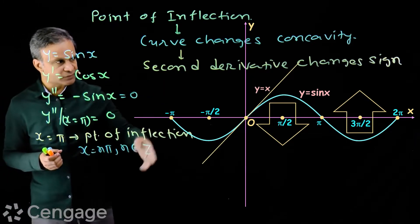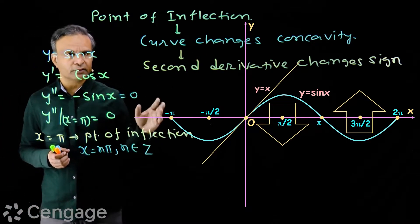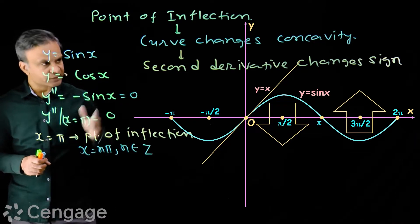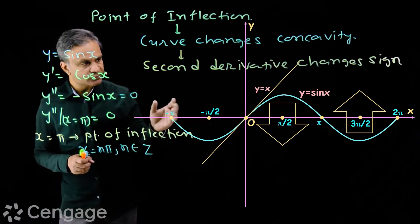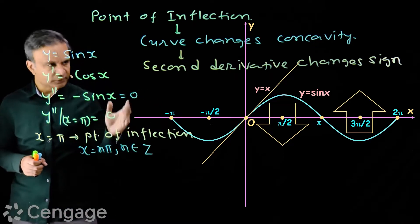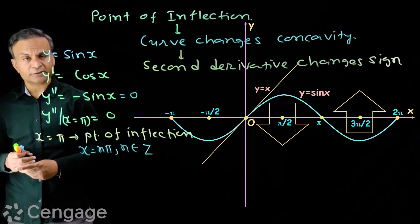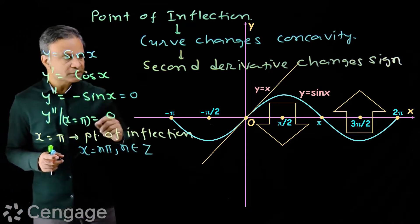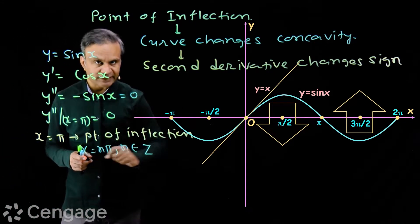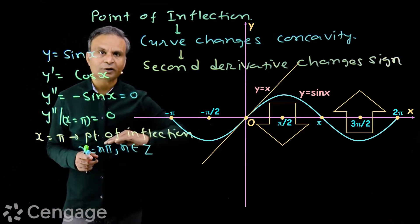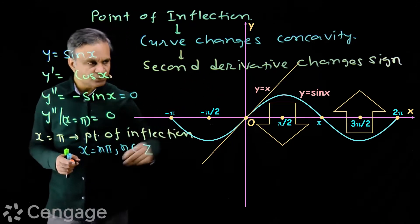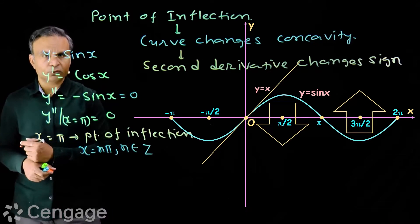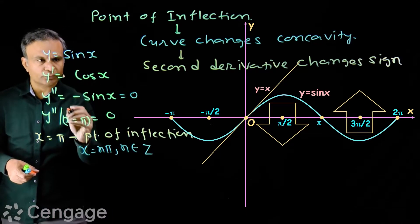We know that the line y = x touches the curve y = sin x at x = 0, so it is a tangent to the curve at x = 0. Here this tangent line is crossing the curve. Let's find the equation of the tangent at x = π.